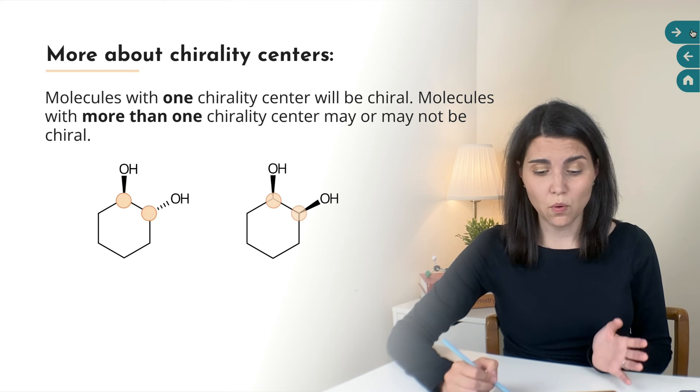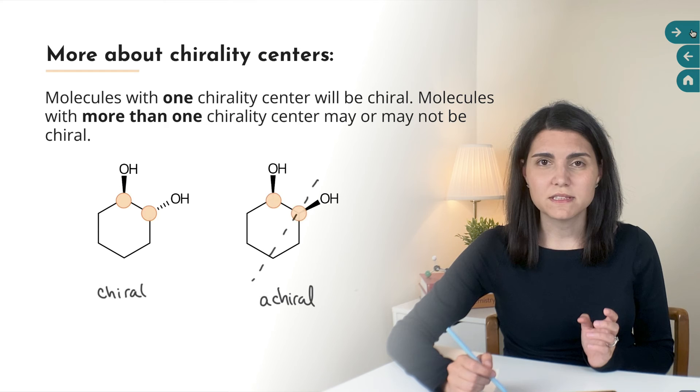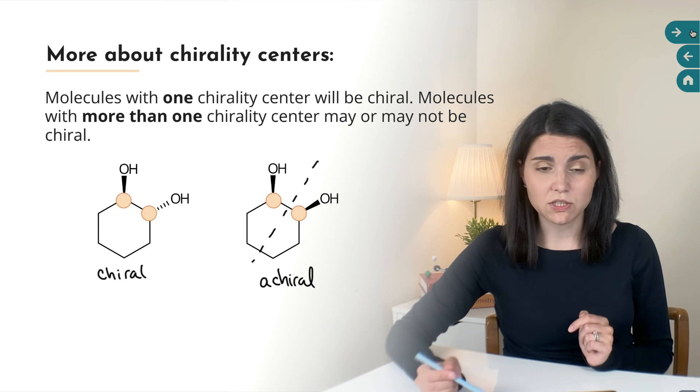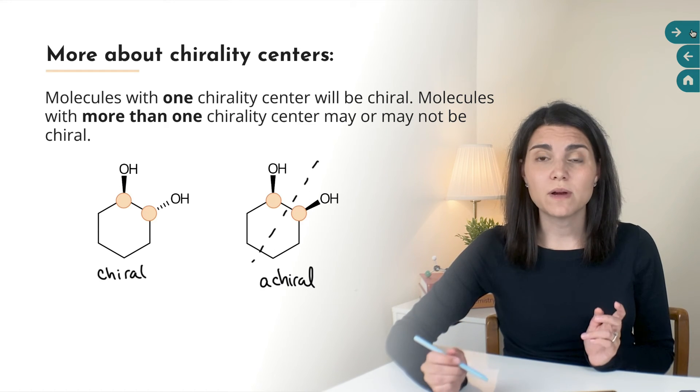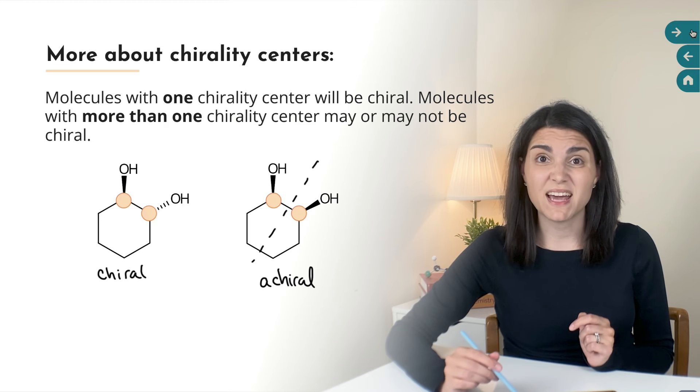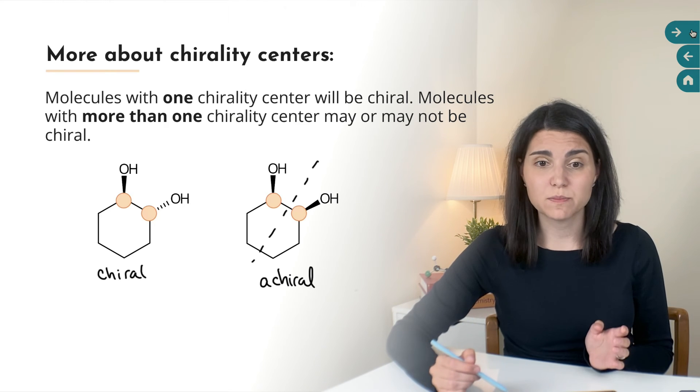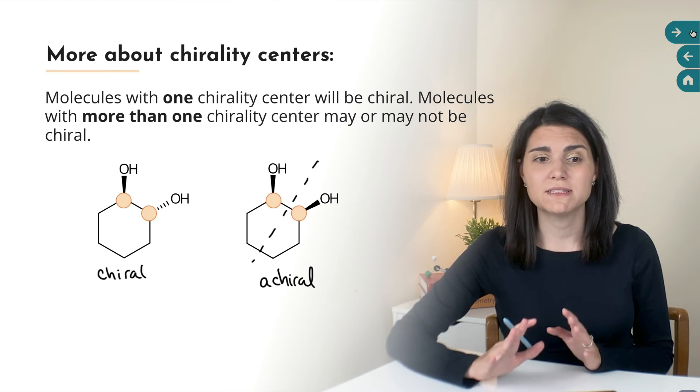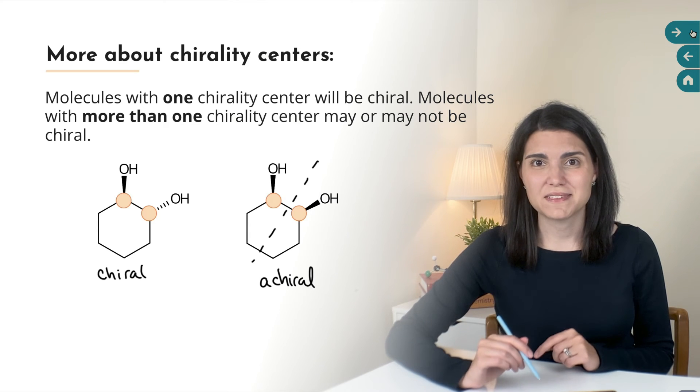For example, these two molecules both have chirality centers. The molecule on the left is chiral, it has no plane or center of symmetry, but the one on the right has a plane of symmetry, so it's achiral. These molecules have a special relationship to each other, they're called diastereomers, and I'm going to talk about that in another lesson.